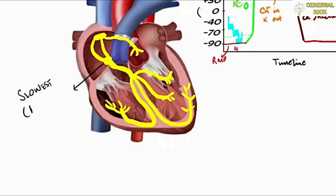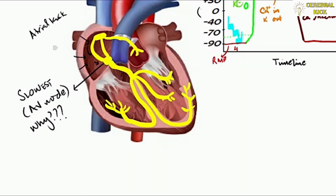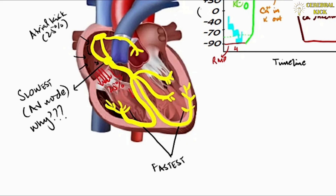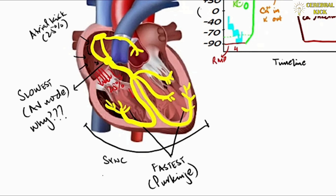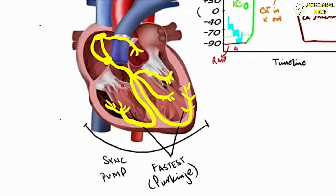Nature has made the AV node the slowest conduction part in the conduction system. When the impulse comes from the SA node, there is a delay at the AV node before it goes into the ventricle. This gives added time for the atrial kick to occur — during that delay, the atrium contracts and contributes 25% added filling into the ventricle. This helps the ventricle generate a bigger stroke volume, in other words better cardiac output. Purkinje fibers are the fastest fibers in terms of conduction, helping the ventricle contract simultaneously in a well-coordinated manner.